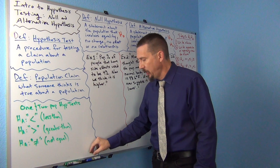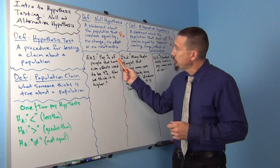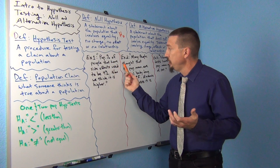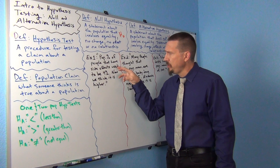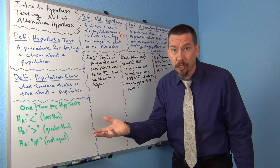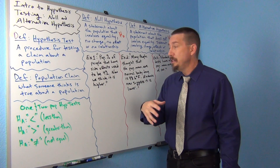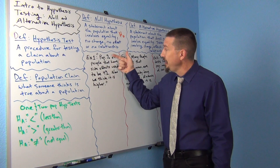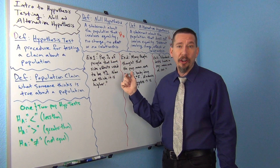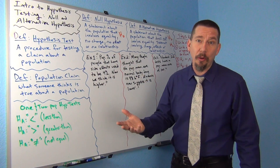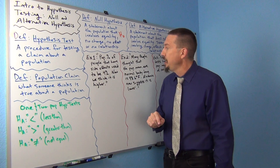This example says a population percentage of people that have side effects to a medicine used to be 4%, but now we think it's higher. Which one do they actually think is true right now — do they think it's still 4% or do they think it's higher? Sounds like they think it's higher. The population percentage used to be 4%, but always read the whole thing before you decide what the claim is. What do they really think is true? Sounds like they think it's higher.